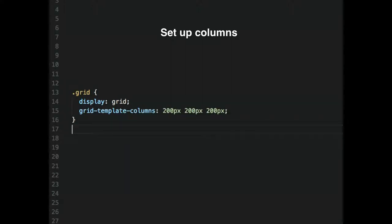To set up three columns, the property name is grid-template-columns, and then you set up three 200-pixel columns. That's pretty straightforward.